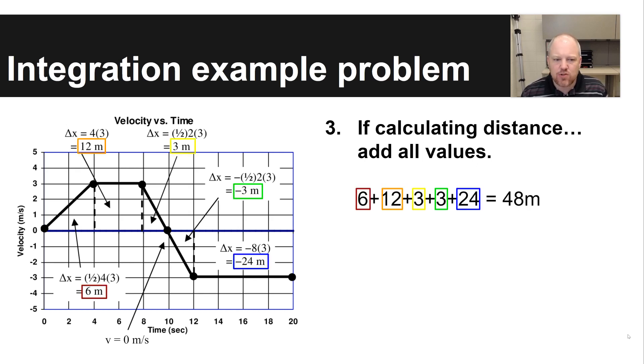If you're calculating distance, what you're going to do is add all these values. Even the values that are shown as negatives here, because the velocity is negative, you're going to add them all up. Because distance is the total length that you've traveled. It doesn't matter if you're going forwards or backwards.